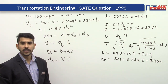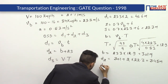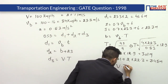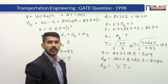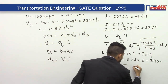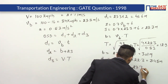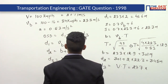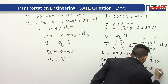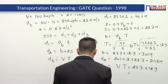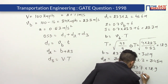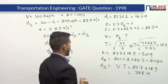The final component d3 equals capital V into capital T. Capital V is 27.77 meters per second and capital T is 12.9 seconds, so d3 comes out to be approximately 358 meters.